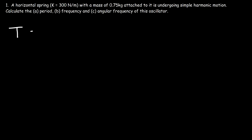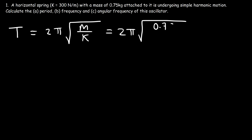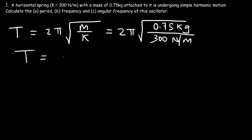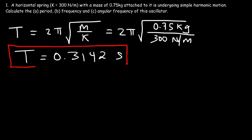The formula we need to calculate the period is this equation. It's equal to 2 pi times the square root of the mass divided by the spring constant, which we have all of that in this problem. The mass is 0.75 kilograms and the spring constant is 300 newtons per meter. So the period is 0.3142 seconds. That's how you can find the period of a simple harmonic oscillator — all you need is the mass and the spring constant.